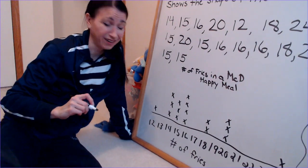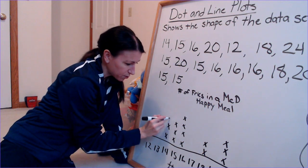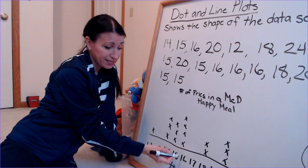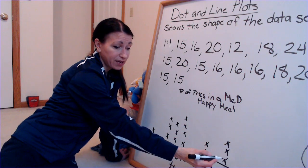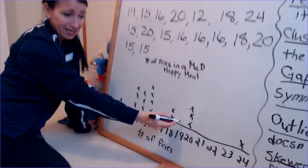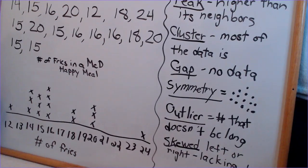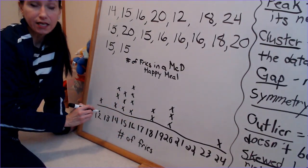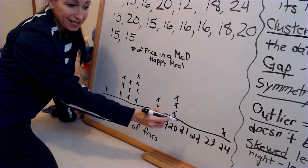Let's go back to our vocabulary on this graph. I see a peak — 16 is definitely our peak, it's higher than both of its neighbors. But 20 is kind of a peak too, and even 18 is higher than what's on either side, so there are actually three peaks. A cluster — the cluster is between 14 and 16. Gaps — there are a lot: gaps at 13, 17, 19, and 21 through 23.